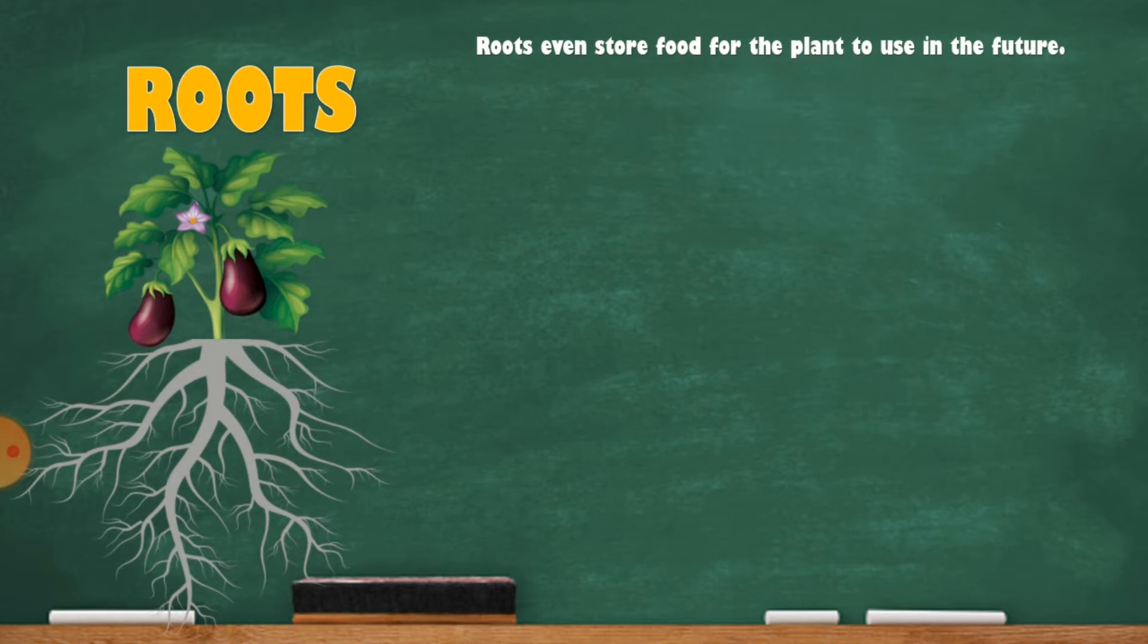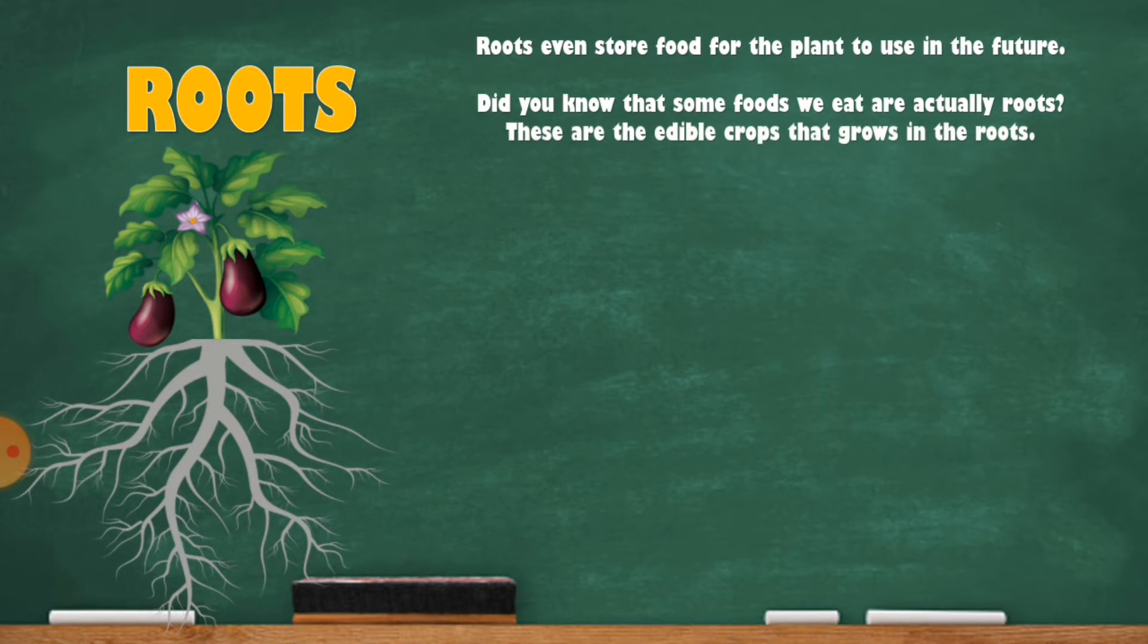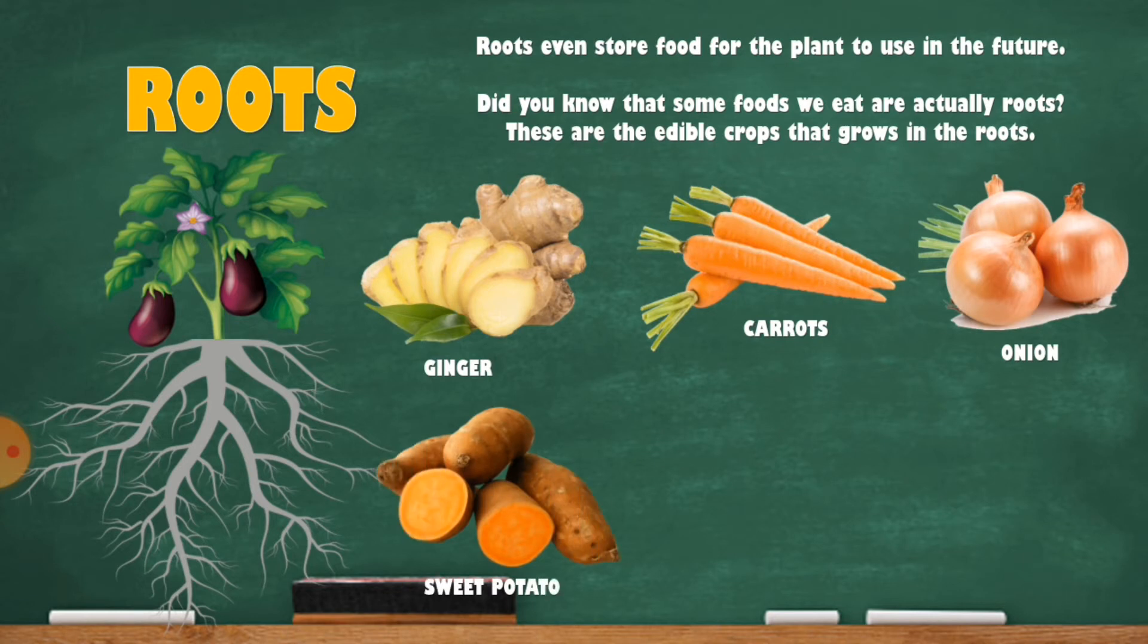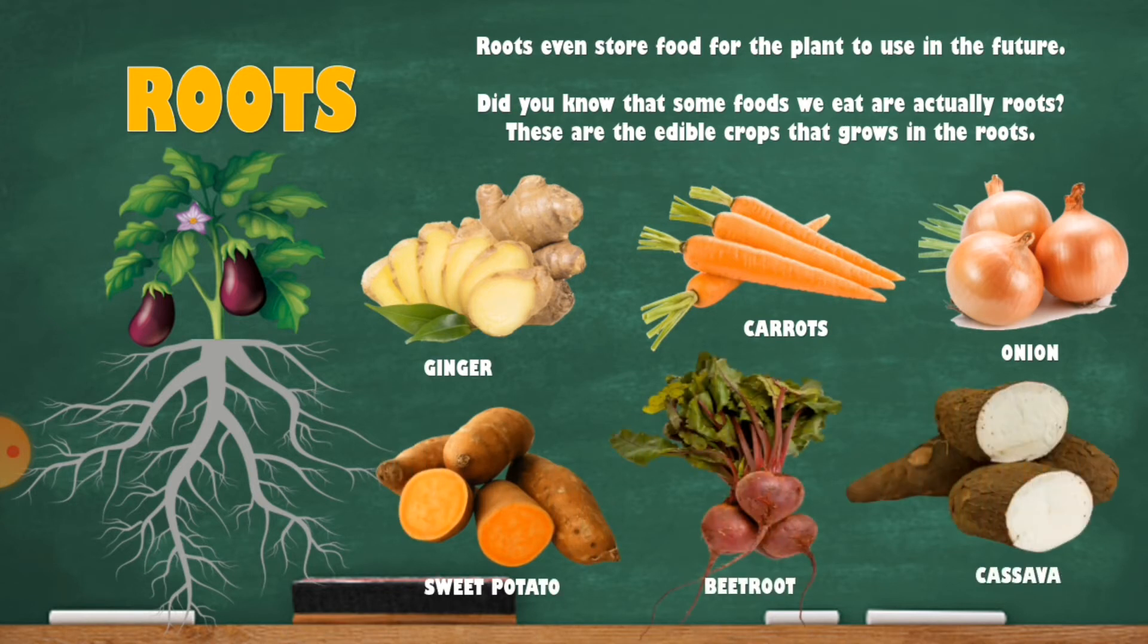Roots even store food for the plant to use in the future. Did you know that some foods we eat are actually roots? These are the edible crops that grow in the roots: ginger, carrots, onion, sweet potato, beetroot, cassava.